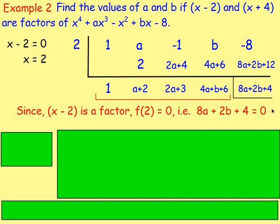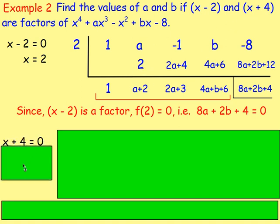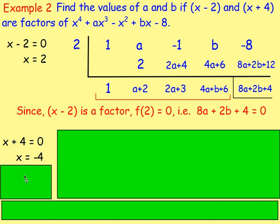There's an infinite number of possibilities for a and b, so we need more information to work out what they will be. But we are also told that x plus 4 is a factor. So if we divide the polynomial by x plus 4, we will also get 0. So set x plus 4 equal to 0, subtract 4 from both sides, and x is negative 4.